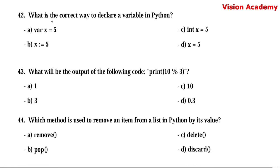Question number 42. What is the correct way to declare a variable in Python? Option A: var x = 5. Option B: x := 5. Option C: int x = 5. Option D: x = 5. Here, option D — x = 5 — is the right answer.